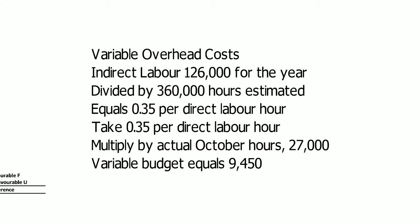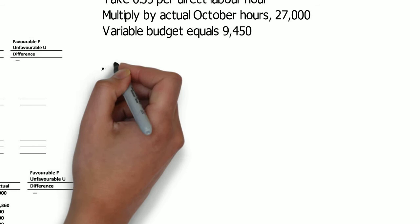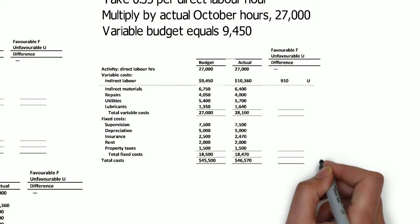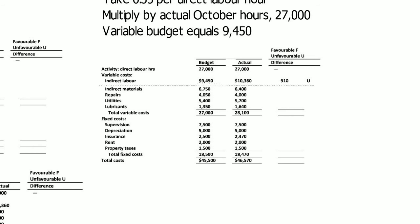Now, to translate that into our October information, our October variance report, what we need to do is take that $0.35 per hour times the actual October hours, which were 27,000. Multiply that through, we get $9,450. And that number is now the number that we put in the budget variable column for indirect labor. We do the same thing for the indirect materials, the repairs, the utilities, and the lubricants, taking each of the original budget dollar number and divide by 360,000 direct labor hours to get our per unit assumption and multiply by the 27,000 actual hours in October.